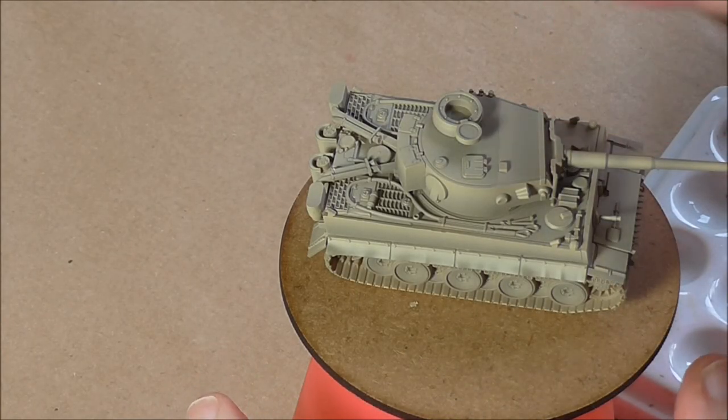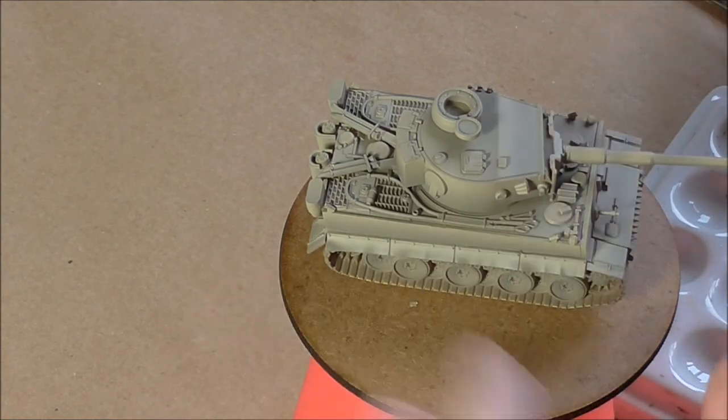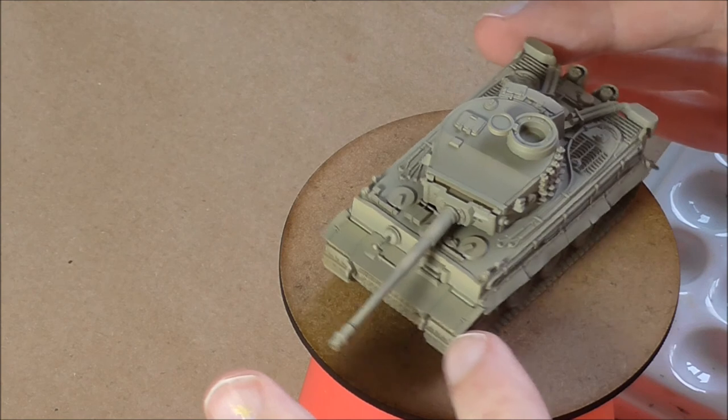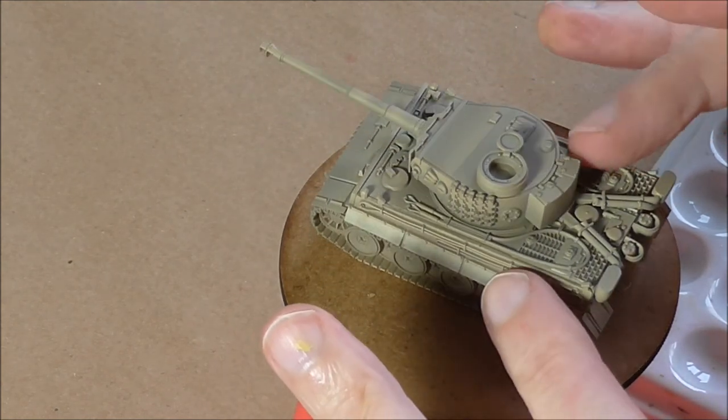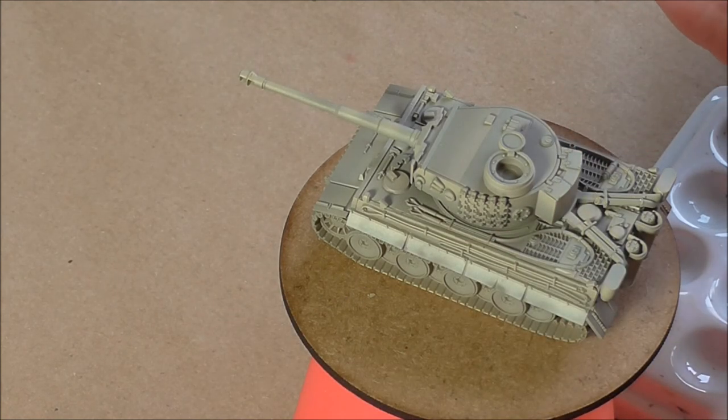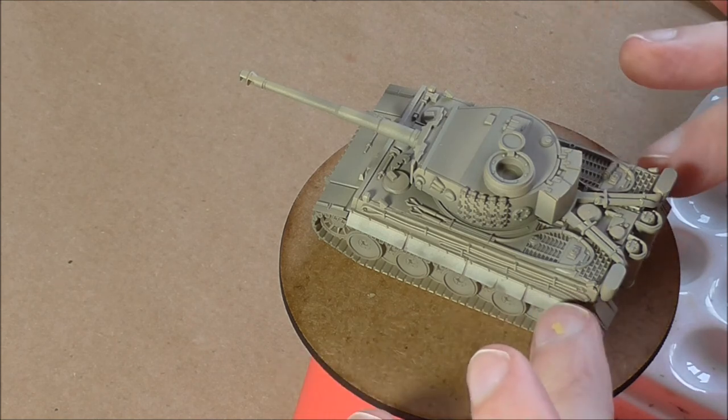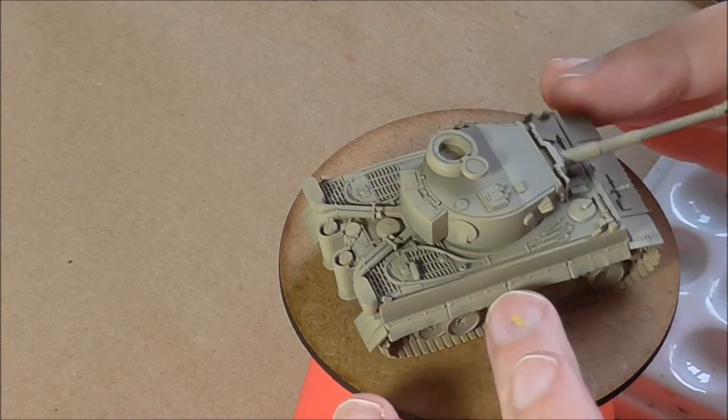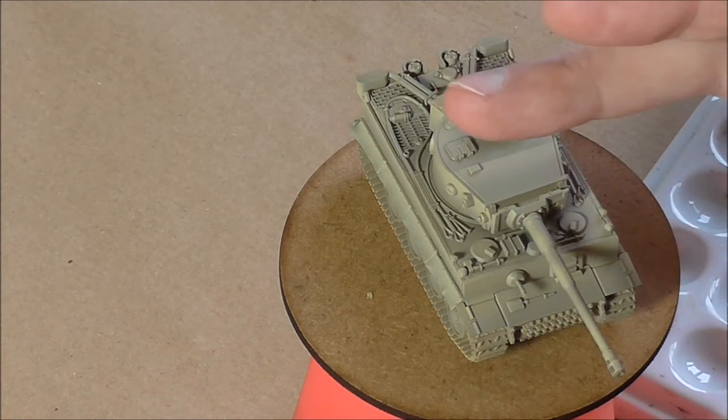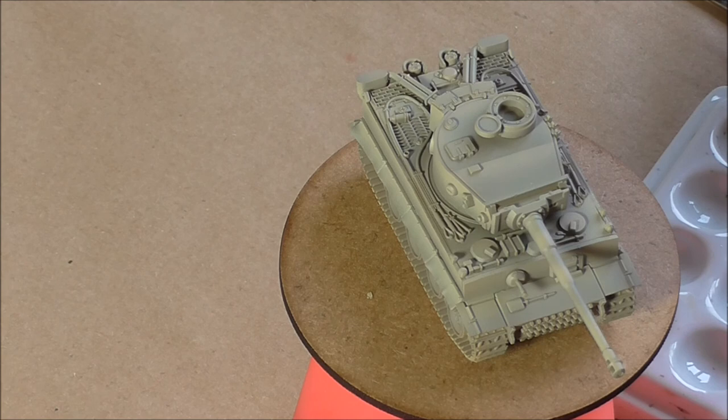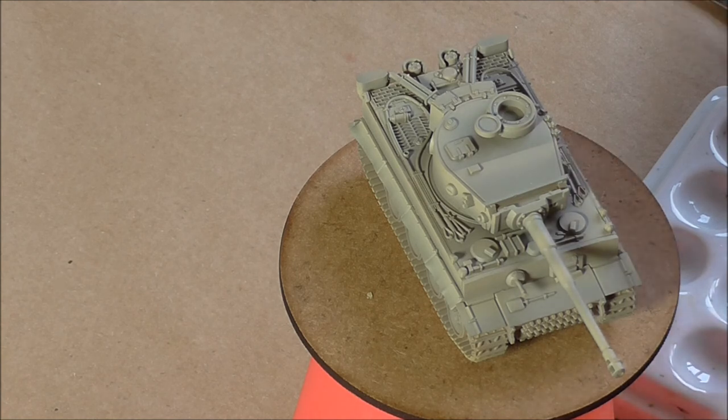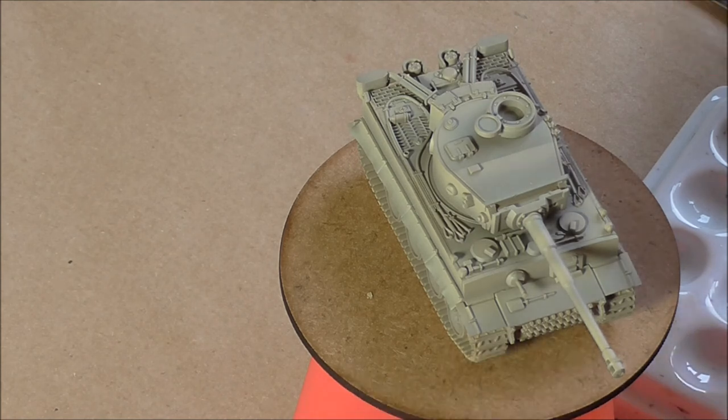So that's the modulation airbrushed on. It's quite stark at the moment. There's fairly obvious transitions between the darkest and the lightest areas. We want that effect to a degree but we don't want it to be too strong. Now there's various things that you can do next when you're dealing with modulation. Most of them you would do on large scale kits. You have to be careful when you're dealing with small scale kits because you might actually end up darkening the whole thing down too much. I keep it to very simple stages.